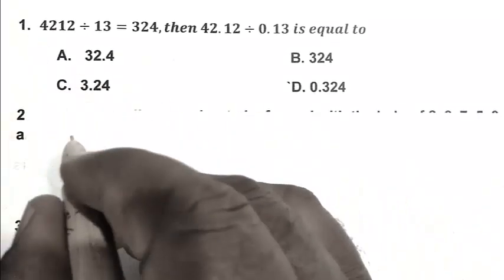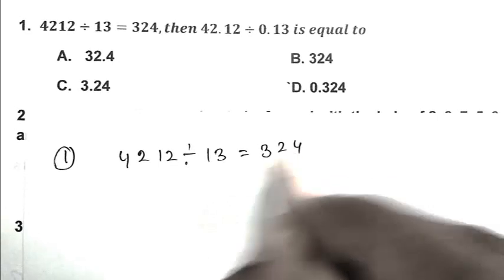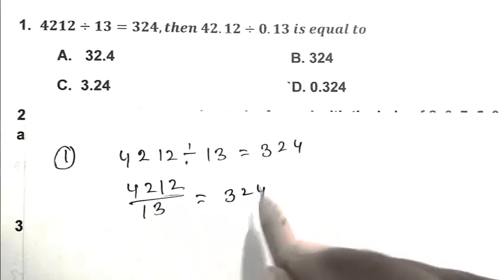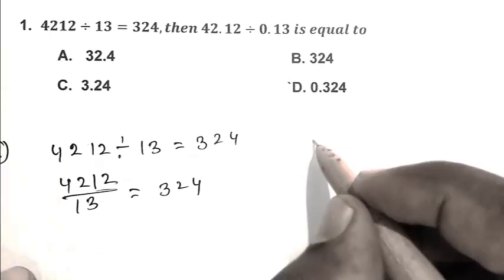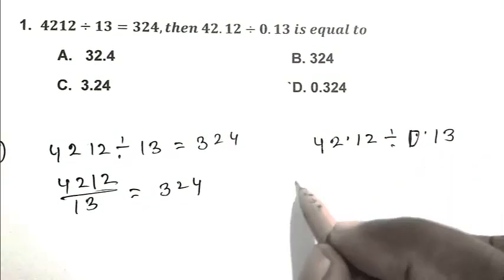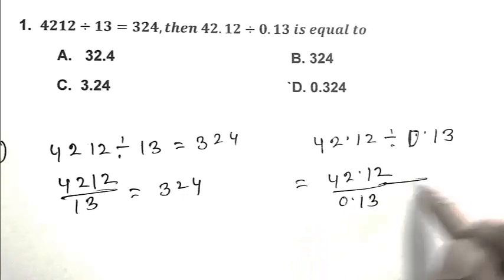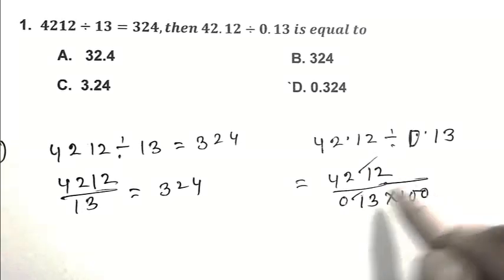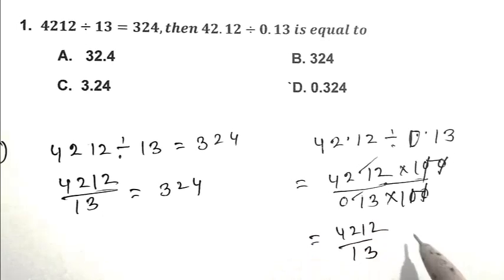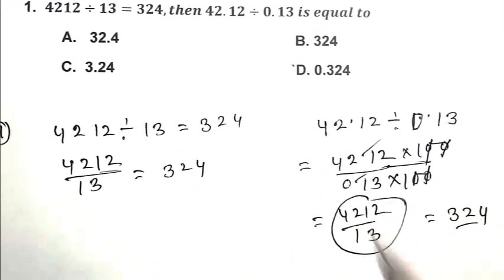First we write 4212 divided by 13 equals 324. Then 42.12 divided by 0.13. Eliminating the decimal points, we get 4212 upon 13, which equals 324. So answer is 324. B is the right answer.